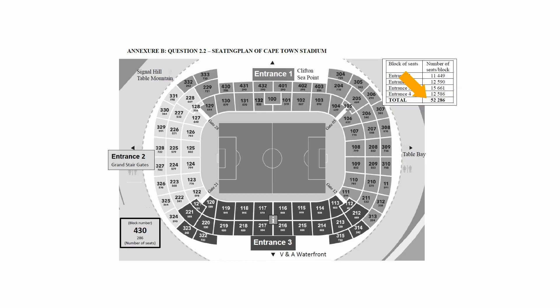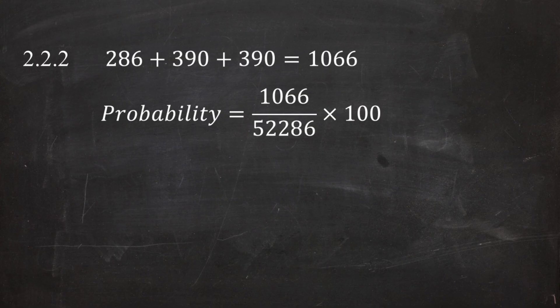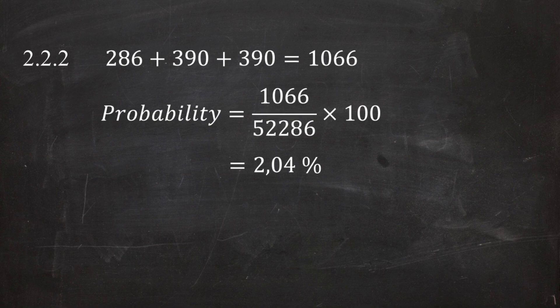From Annexure B, the total number of seats in the stadium is 52,286. So the probability as a percentage of randomly getting a seat in blocks 401 to 403 is: 1,066 ÷ 52,286 × 100, which gives a probability of approximately 2.04 percent.